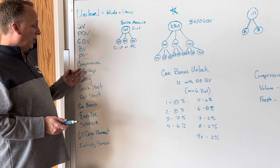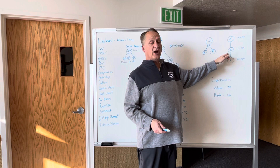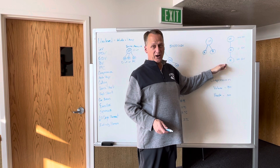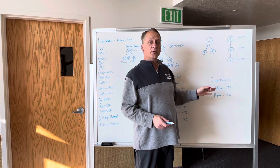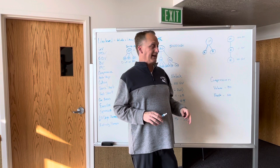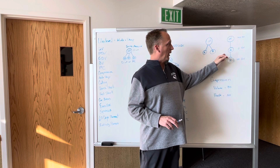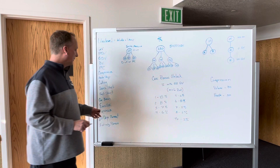We have something called dynamic compression. Here's how it works: say Mary's account has 100 QV, Adam had zero QV in January, and Ryan had 100 QV. Compression means volume will move up each month to pay you the most it possibly can — people don't move, but volume does. The structure stays in place, but compression automatically moves volume up to maximize your commission. In this instance, Ryan's 100 QV moves up to Mary's level one because Adam wasn't active in January, while Ryan stays on level two.